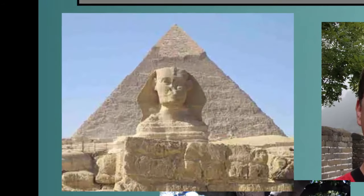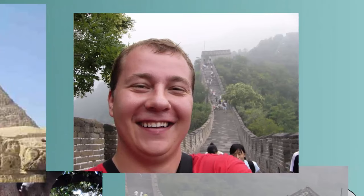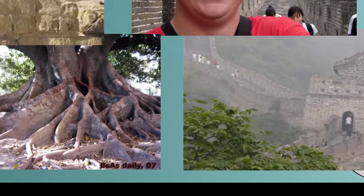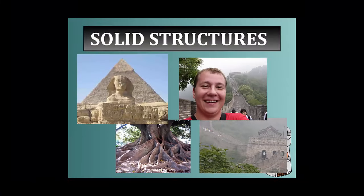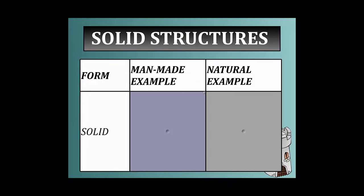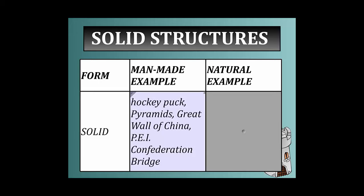Some other solid structures include the pyramids, which we mentioned before — those are solid structures. There I am at the Great Wall of China; the wall itself is a solid structure. Roots and trees are solid structures as well — they do have tubes that run in them, but the basics of them are a strong solid form, and the trunk of the tree could be considered a solid form. Man-made examples include a hockey puck, the Great Pyramids, the Wall of China, and the PEI Confederation Bridge. Natural examples include the tree trunk and the human brain.